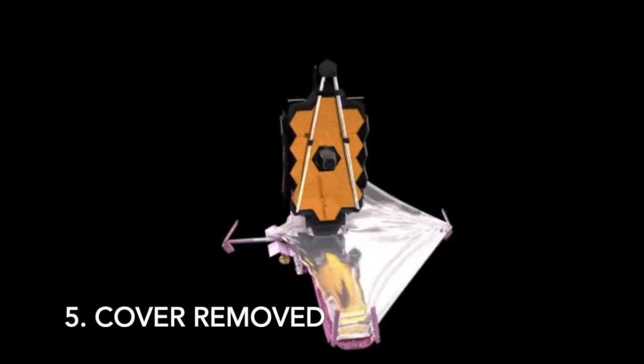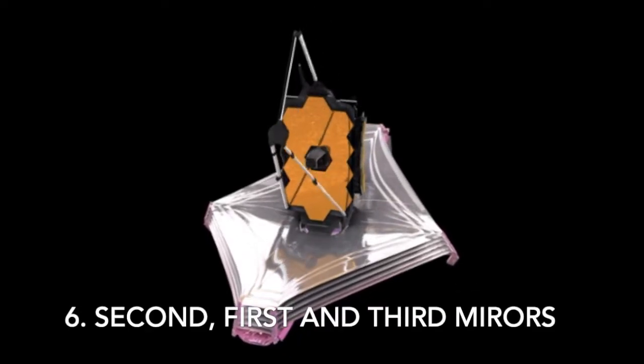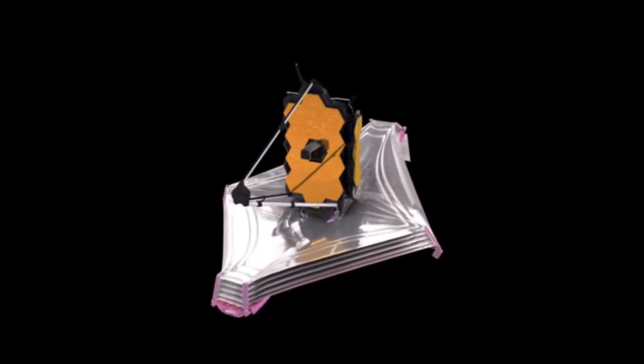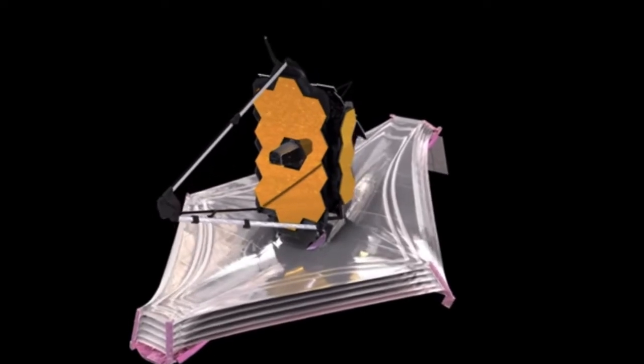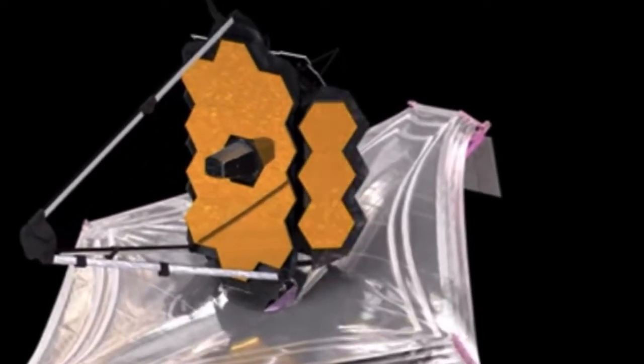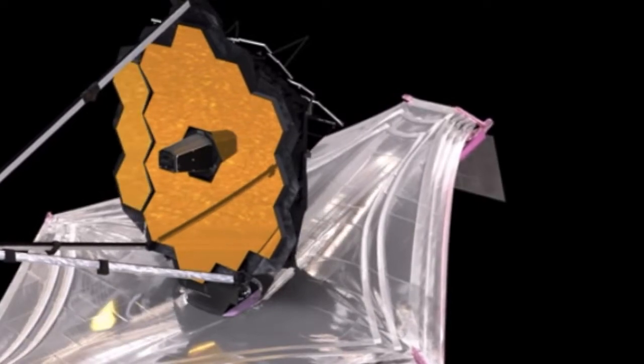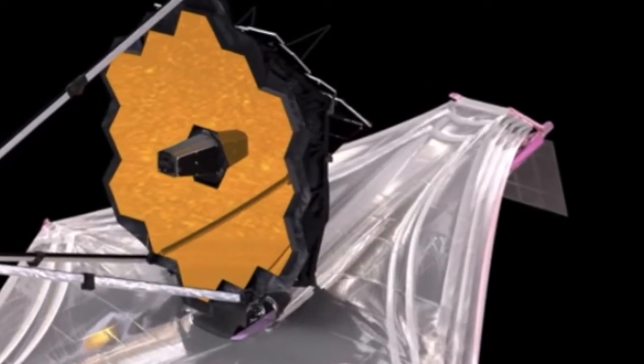Fifth, the cover of the sunshield will be removed. Lastly, the second, first, and third mirrors will be unfolded, respectively. The first mirror of the James Webb Telescope, unlike that of other telescopes, is made up of hexagons, meaning that it can unfold very well.